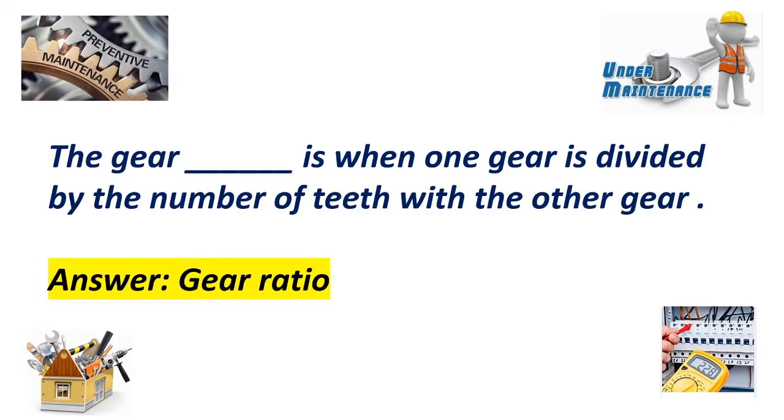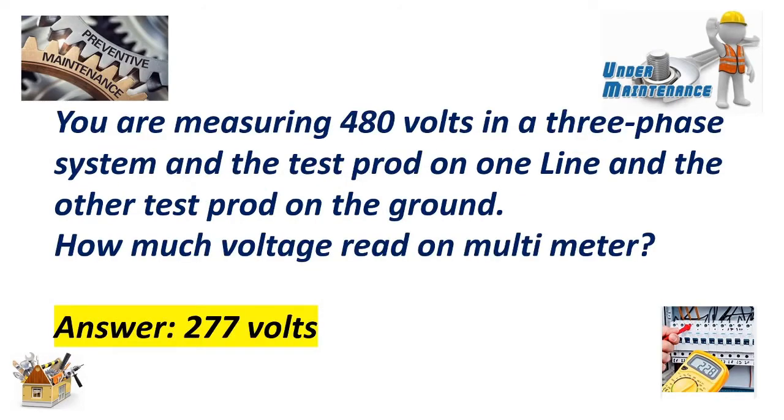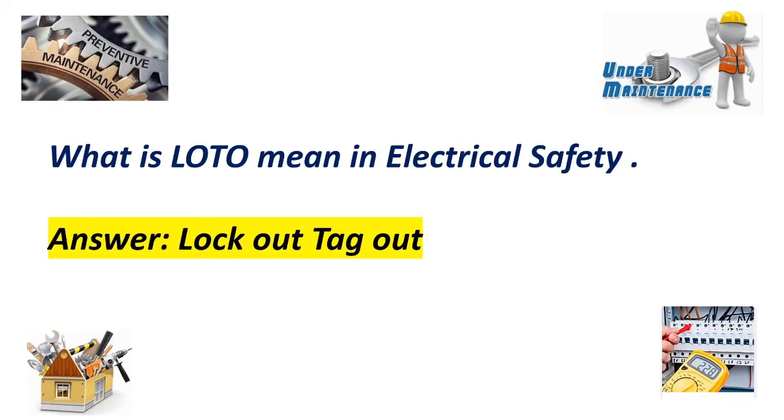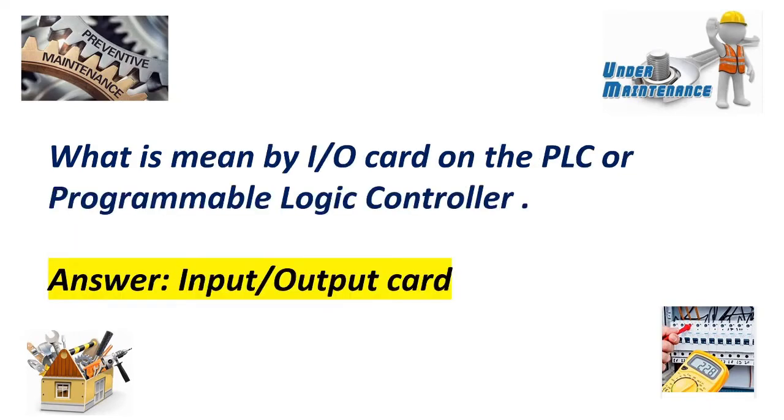The gear ratio is one gear divided by the number of teeth with the other gear. You are measuring 480 volts in a three-phase system with the test probe on one line and the other test probe on the ground. How much voltage reads on the multimeter? Answer: 277 volts. What does LOTO mean in electrical safety? Answer: Lockout tagout. What is meant by I/O card on the PLC or programmable logic controller? Answer: Input-output card.